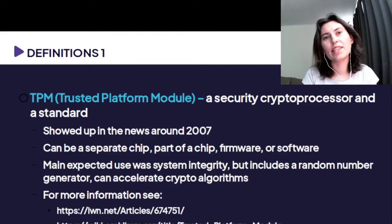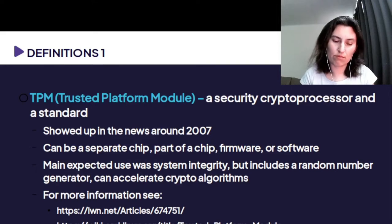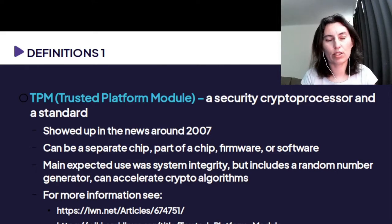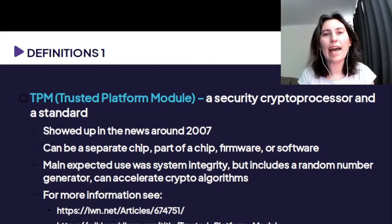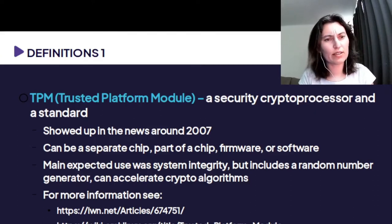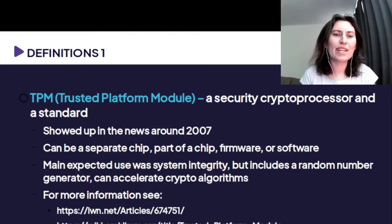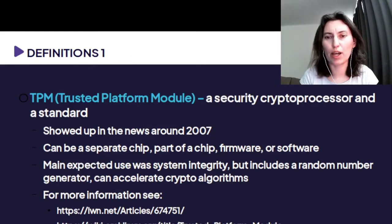There have been some technologies being added so that we can add more protection to the system. The first that has shown up is the TPM — Trusted Platform Module. It is two things at the same time: a security crypto processor and a standard. It showed up around 2007. A TPM can be a separate chip, which is the big majority of cases today, but it can also be part of the chip, in firmware, or in software.